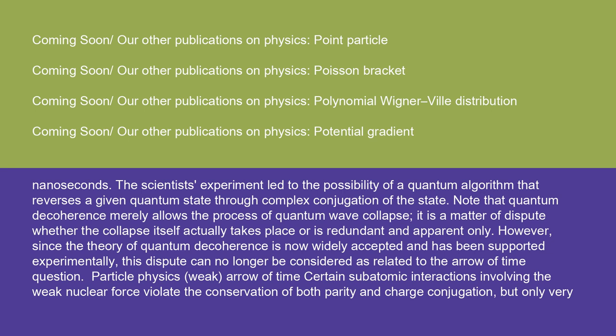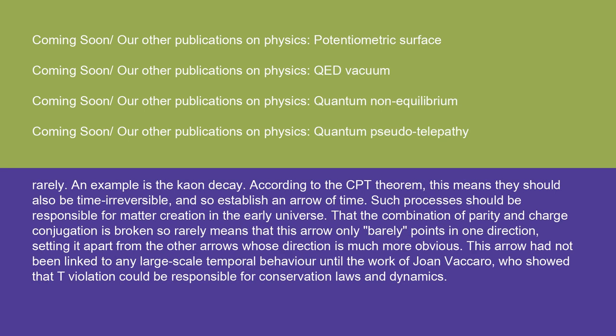Certain subatomic interactions involving the weak nuclear force violate the conservation of both parity and charge conjugation, but only very rarely — an example is the K-on decay. According to the CPT theorem, this means they should also be time-irreversible and so establish an arrow of time. Such processes should be responsible for matter creation in the early universe. That this combination of parity and charge conjugation is broken so rarely means that this arrow only barely points in one direction, setting it apart from the other arrows whose direction is much more obvious. This arrow had not been linked to any large-scale temporal behavior until the work of Joan Vaccaro, who showed that T violation could be responsible for conservation laws and dynamics.